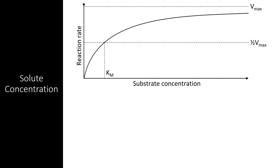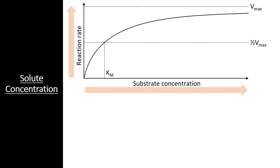One of the simplest things that can affect enzyme function and the rate of a reaction is the concentration of substrate molecules within a solution. There is no doubt you will see a question on the AP test that has something to do with the substrate concentration. In the most basic analysis, the reaction rate increases as the substrate concentration increases. However, you will notice that this relationship is not linear.